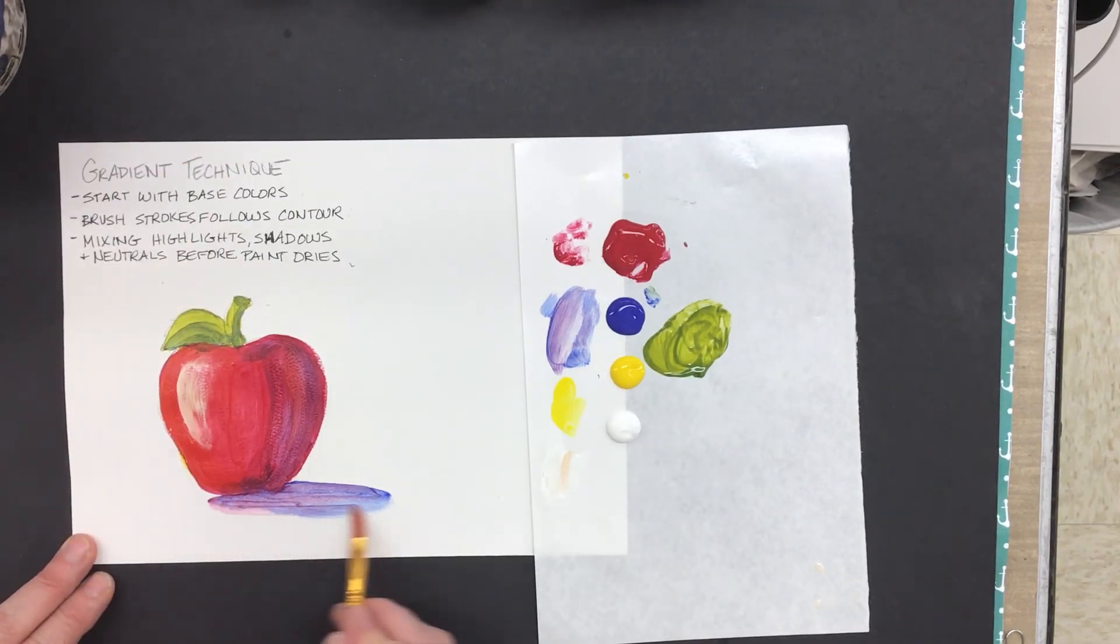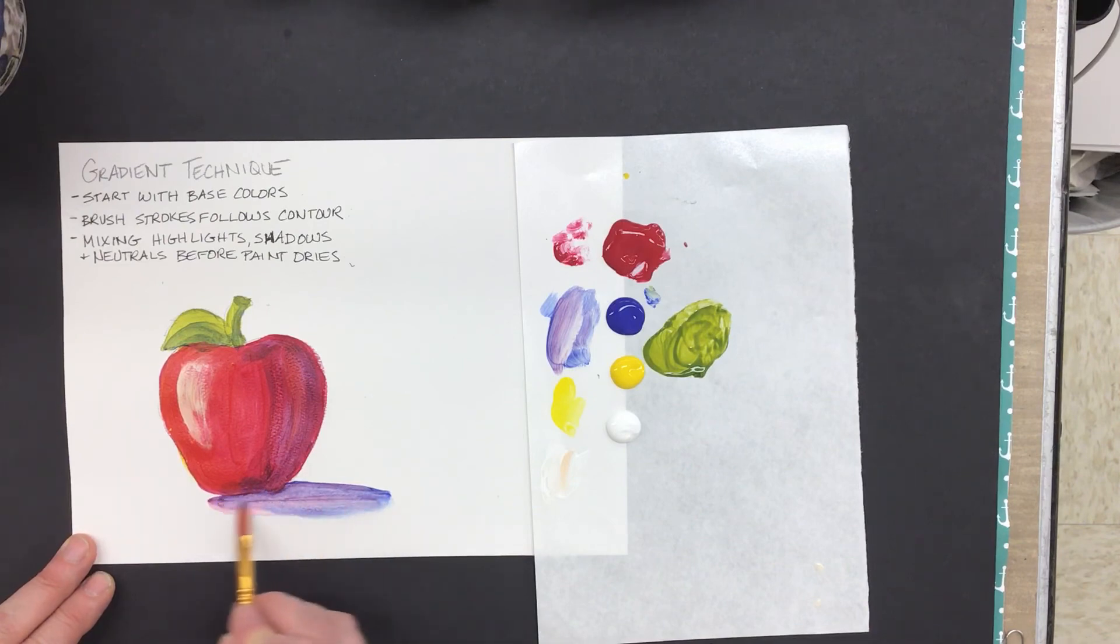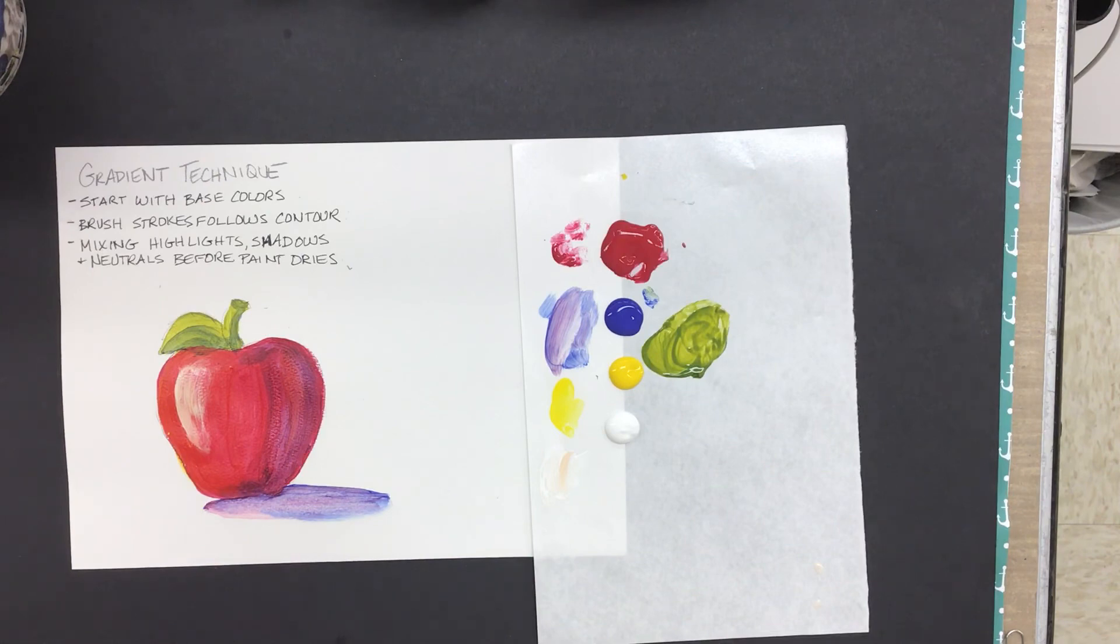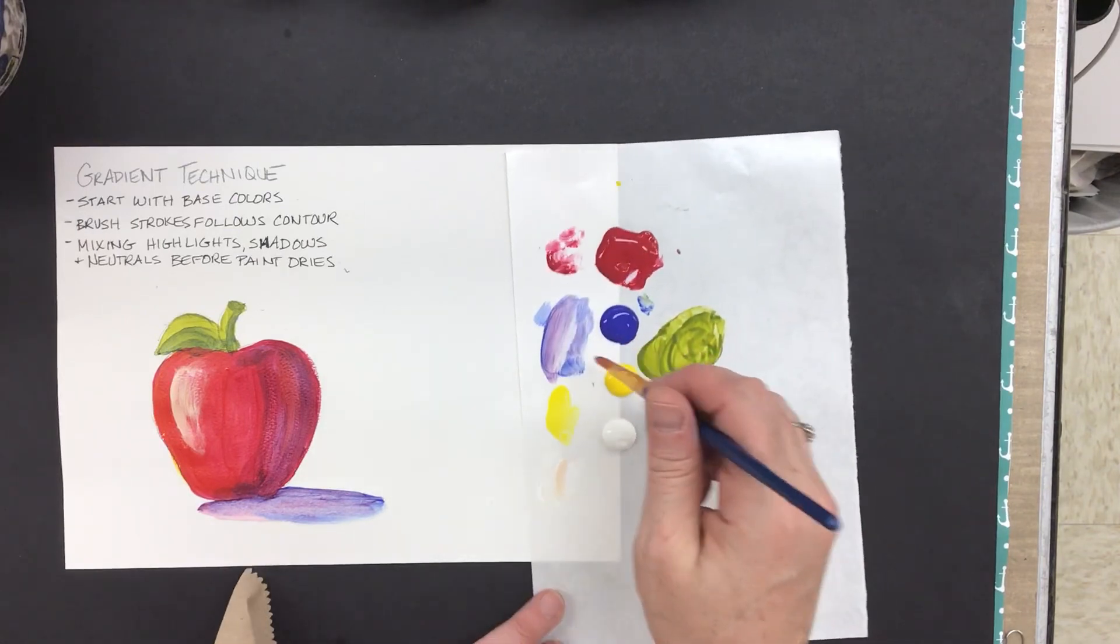So a clean brush acts almost like a burnishing pencil, right? It allows you to blend. If you use a clean brush or layer highlights and shadows, you're going to blend as you go.